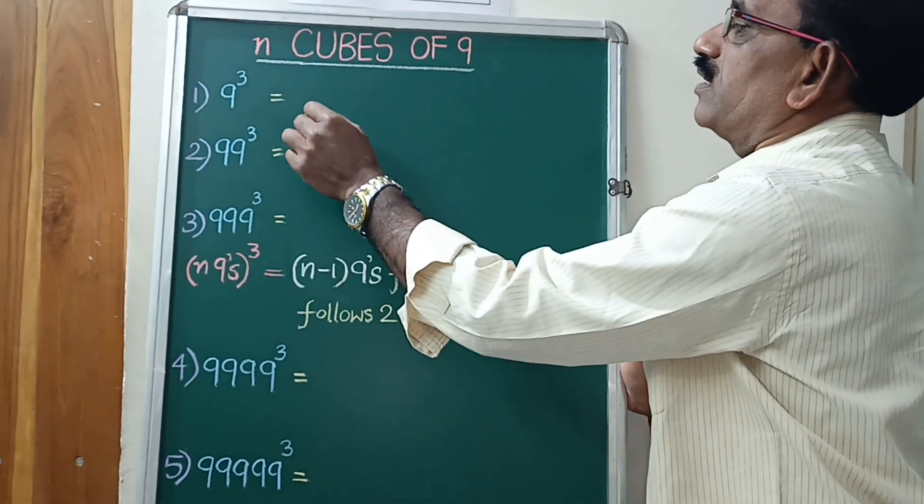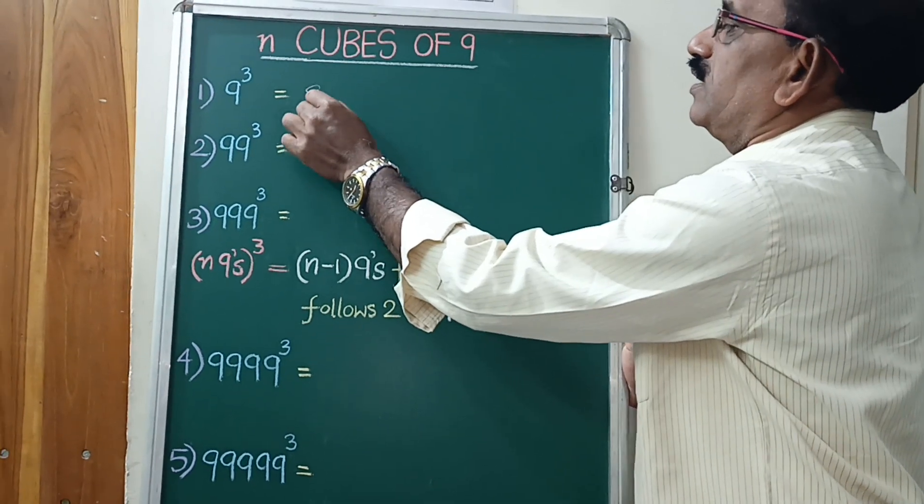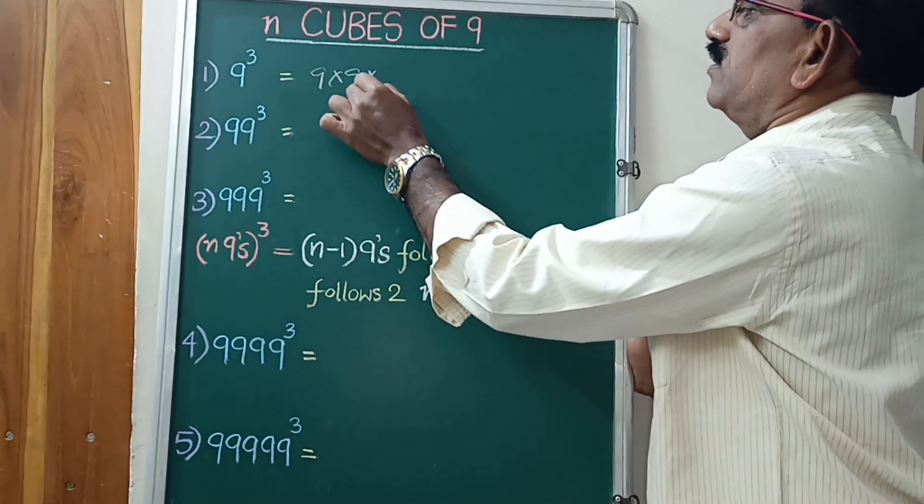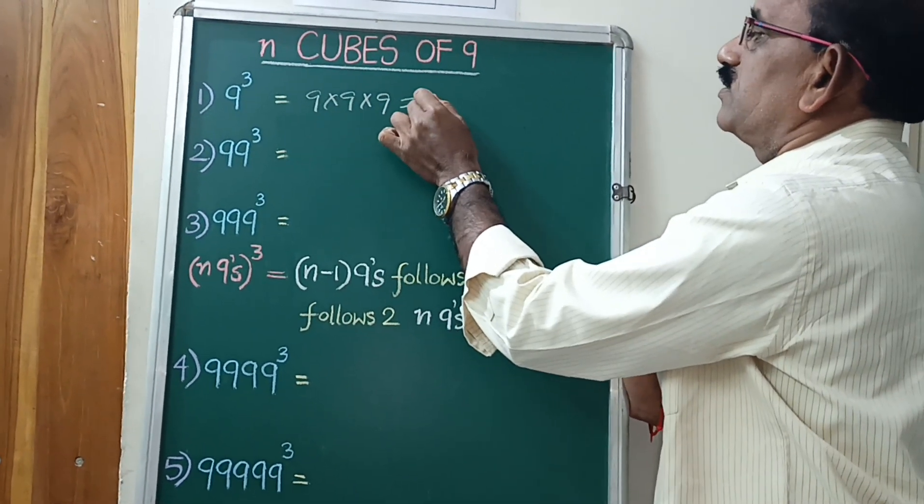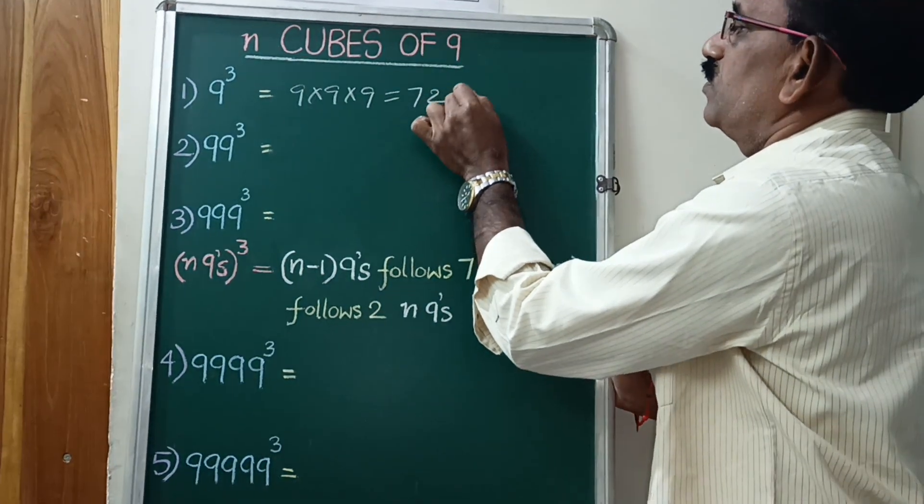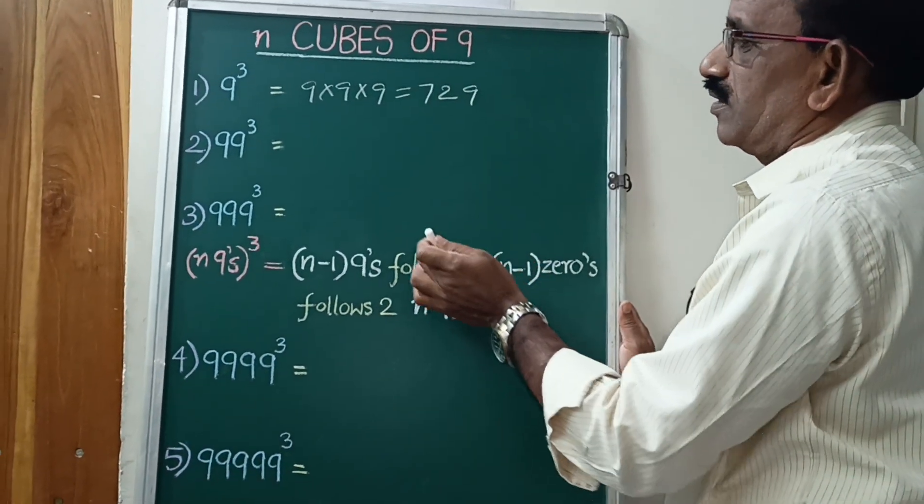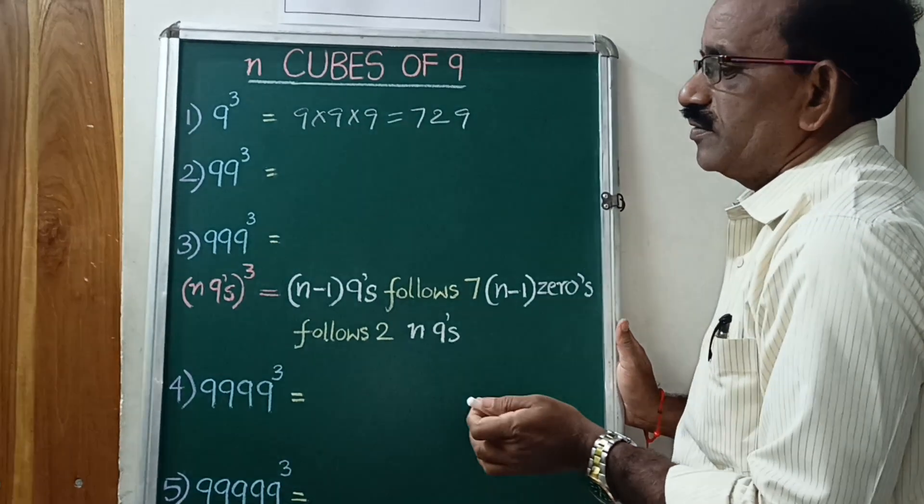9 cube equal to 9 into 9 into 9. That is equal to 729. Easy Maths by formula.